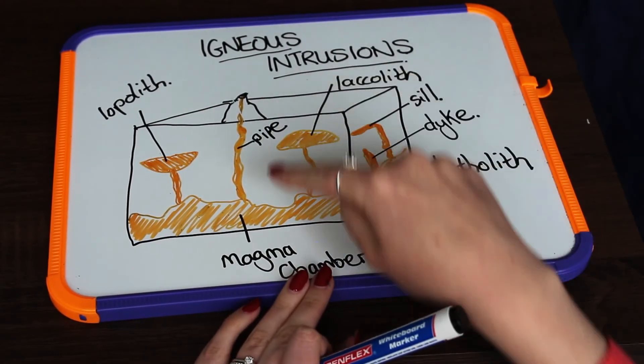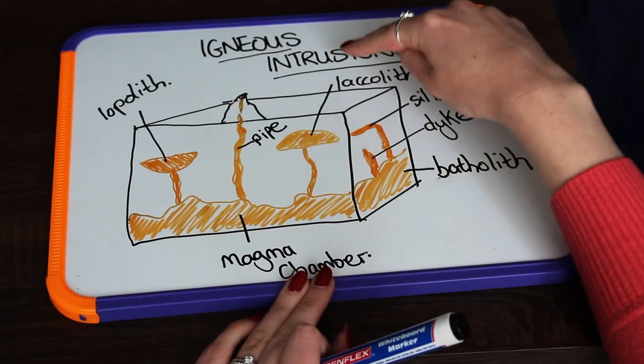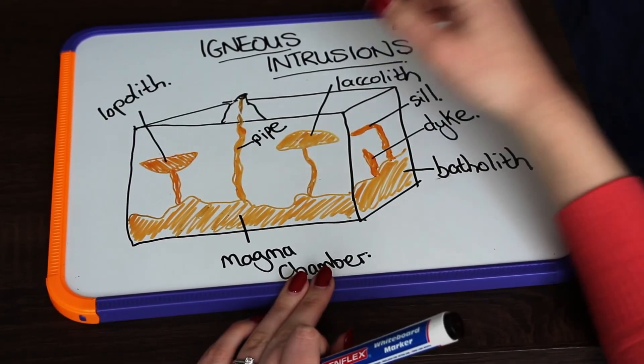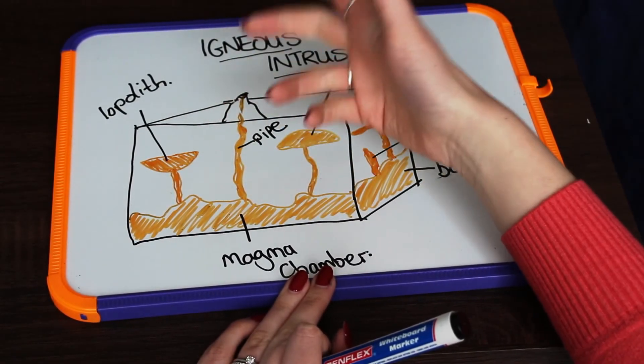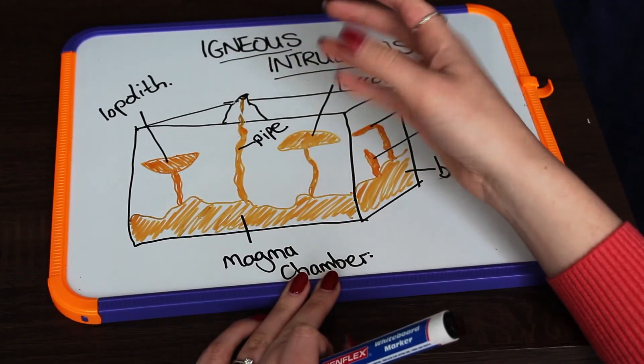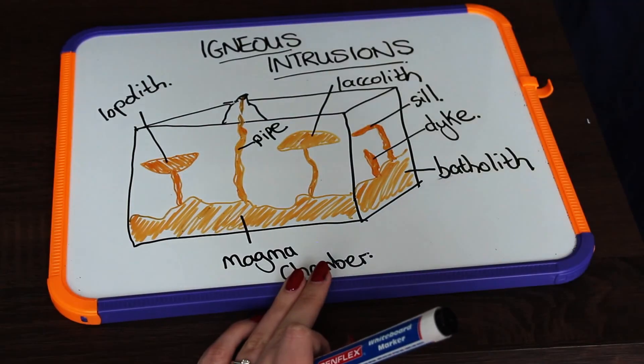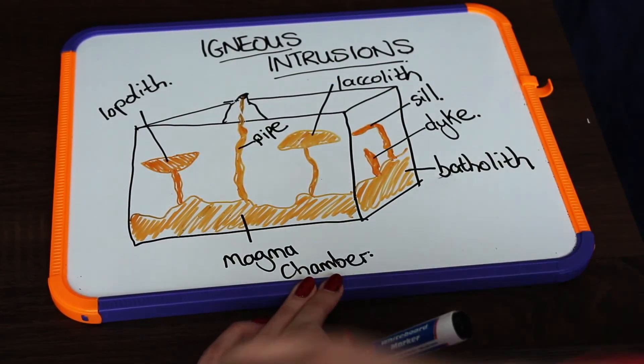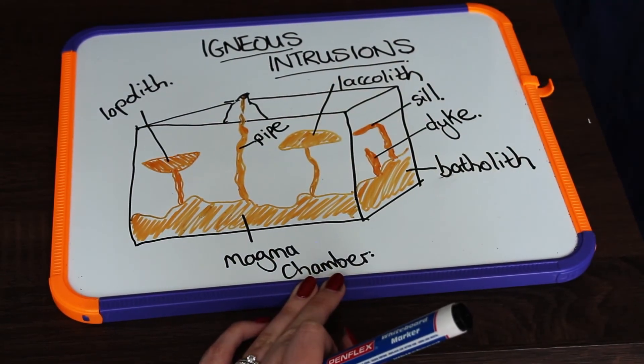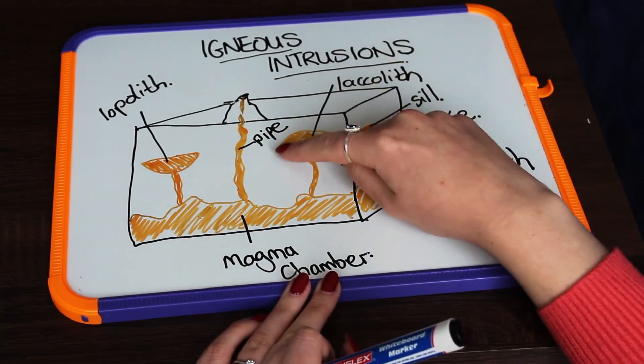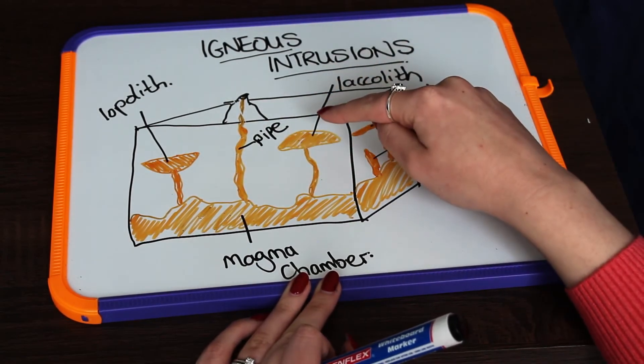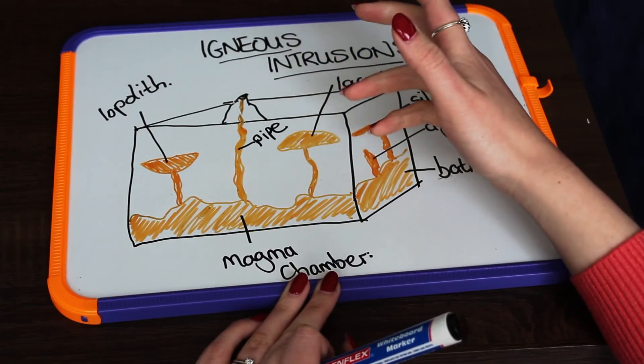Now remember, these formed inside our earth's crust, so they are igneous intrusions. Over time the surrounding rock can erode, and this means that our igneous intrusions will then be exposed to the earth's surface. When they are exposed to the earth's surface, we call them different things. For example, if a lacolith was exposed to the earth's surface, we would then call that feature a dome.